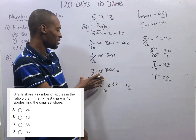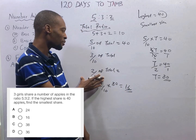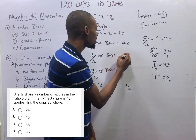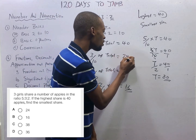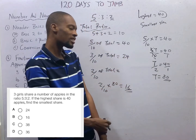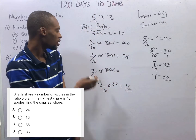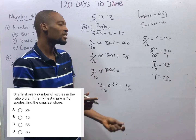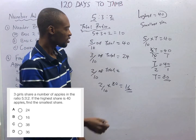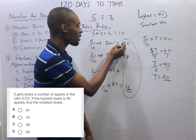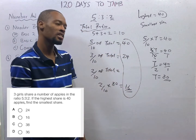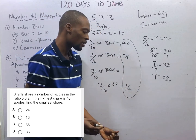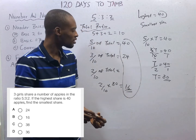So the least share is 16 apples. This person is taking 24 apples because that is what remains. So, 16 is our correct answer.